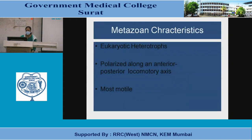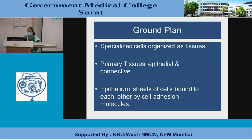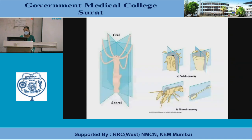Characteristics of metazoans: they are eukaryotic heterotrophs, polarized along an anterior-posterior locomotory axis, and mostly motile. They have specialized cells organized as tissues. Primary tissues include epithelial and connective epithelium, with cells bound to each other by cell adhesion molecules. Body symmetry progresses from oral and aboral, to radial symmetry, then bilateral symmetry.